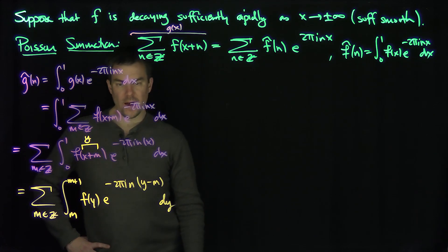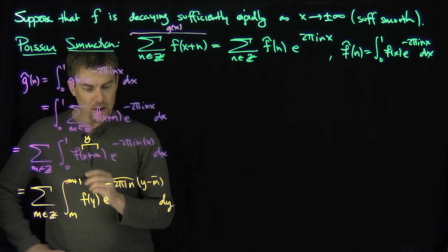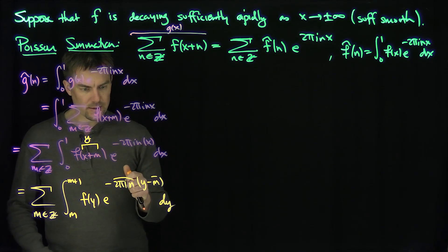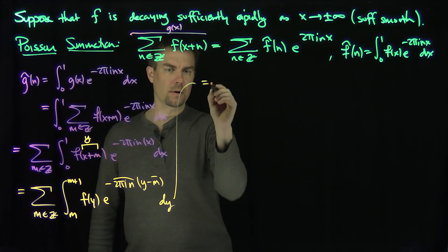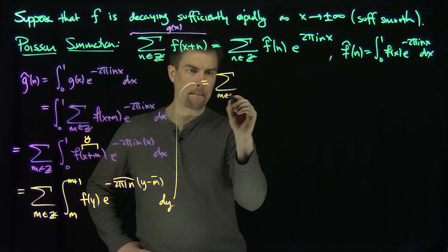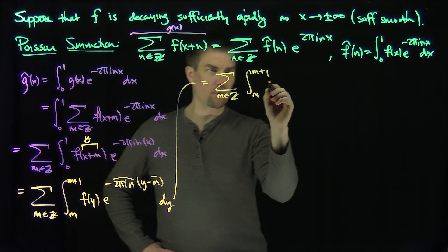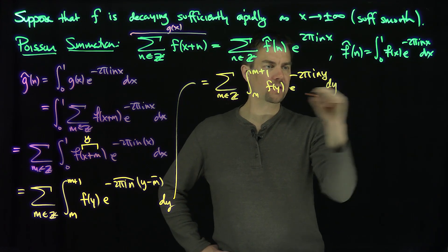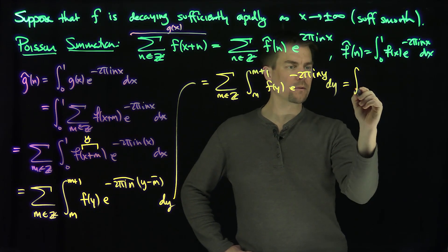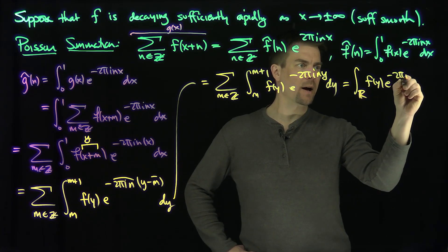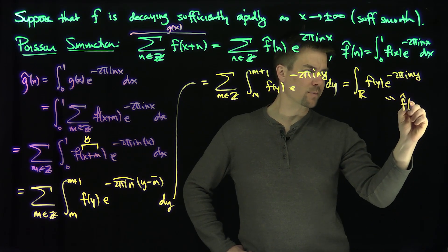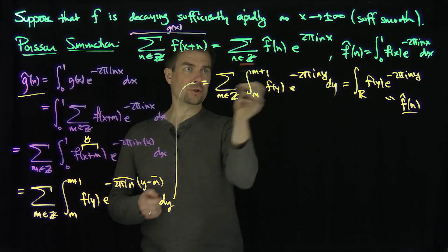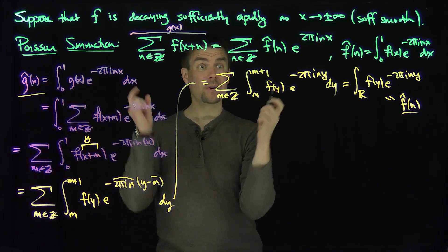Now if I look at the 2 pi i n hit with an m, both those things are integer multiples of 2 pi i, so that factor turns into 1. So this simplifies to the sum over m in Z of the integral from m to m plus 1 of f of y times e to the minus 2 pi i n y dy. Summing over all m in Z turns the union of intervals into all of R. So this is just the integral over R of f of y times e to the minus 2 pi i n y dy, which is exactly by definition f-hat of n — the Fourier transform evaluated at n. In other words, the Fourier coefficients of g coincide with the Fourier transform values, so the functions must be equal. That proves Poisson summation.